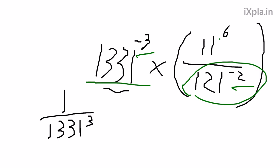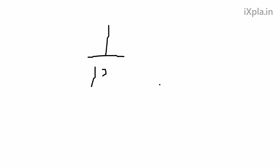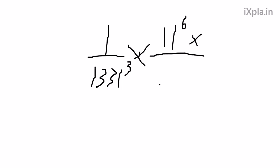So we have 1 over 1331 to the power of 3 — the negative goes away when you flip it. Times 11 to the 6th, which already has a positive exponent, so it stays as a numerator. And 121 had a negative exponent, so it becomes a numerator as well, giving us 121 to the power of 2, with a denominator of 1. Let's rewrite this more cleanly: 1 over 1331 cubed, times 11 to the 6th, times 121 squared.